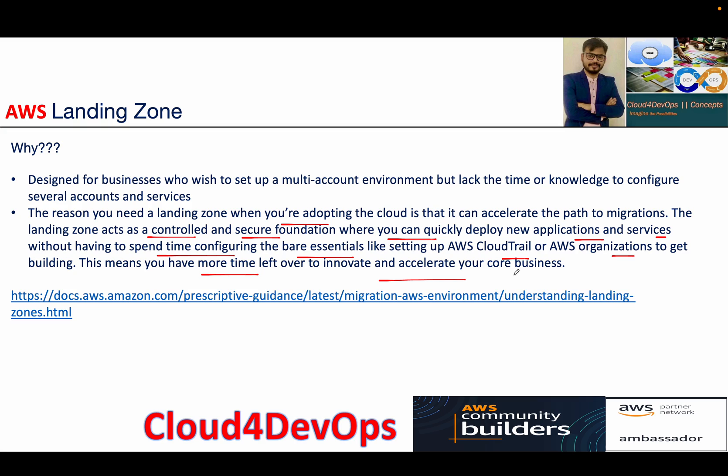There's one important point I want to mention, which I'll also cover in the Control Tower section. When you're starting your business on AWS Cloud, it's better to start with Control Tower or Landing Zone, because when you start Control Tower, it goes through Landing Zone, creates multiple accounts with best practices, and guardrails — like a standard service control policy — get pushed out to each member account.